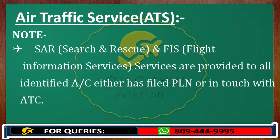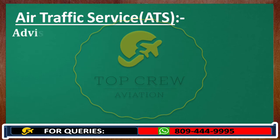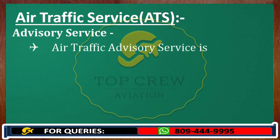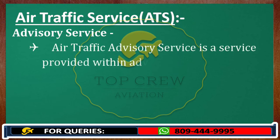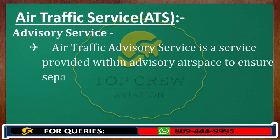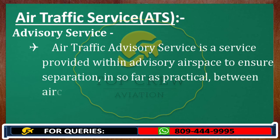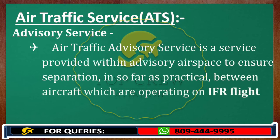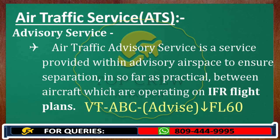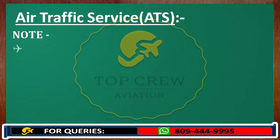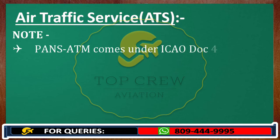Now we will discuss advisory services. Air traffic advisory service is a service provided within advisory airspace to ensure separation, in so far as practical, between aircraft operating on IFR flight plans. In this service, ATC will use advice — for example: 'Victor Tango Alpha Bravo Charlie, advice to descend flight level 6-0.' Note that PANS ATM comes under ICAO Doc 4444 — remember this, as it is a very important exam question.